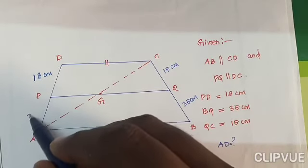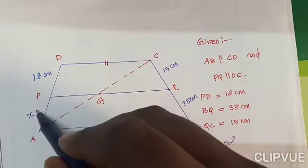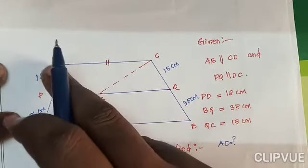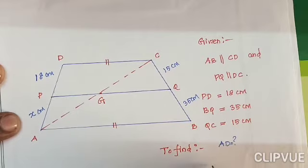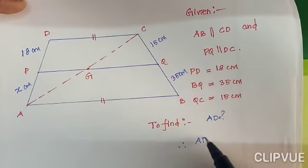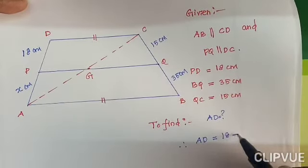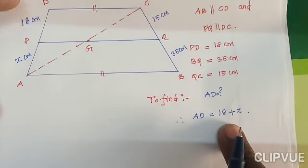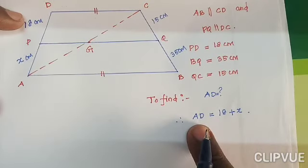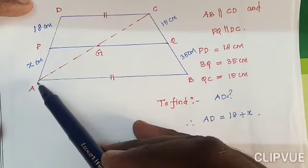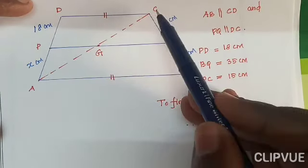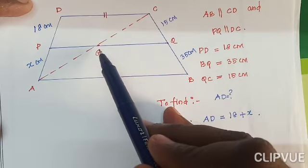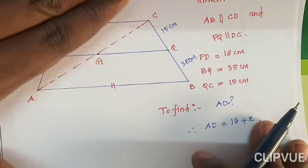Assume the length AP = X centimeters. So AD = AP + PD = X + 18. After finding X, we add 18 to get AD. Now join the diagonal A to C. It meets the straight line PQ at the point G.